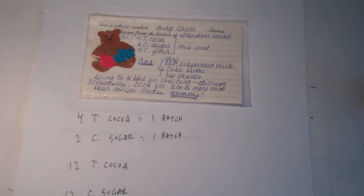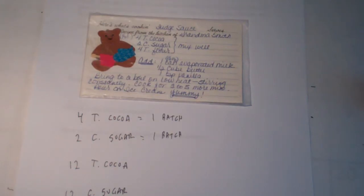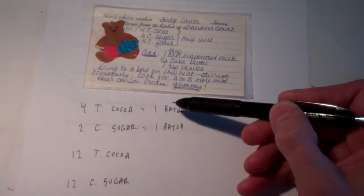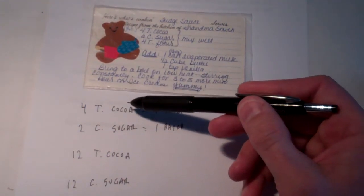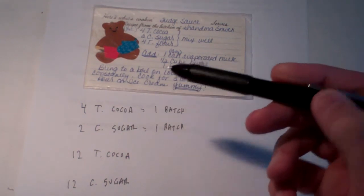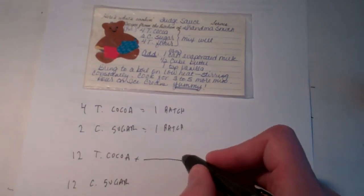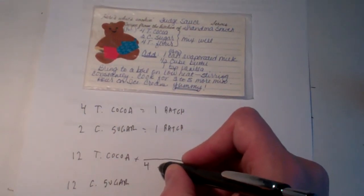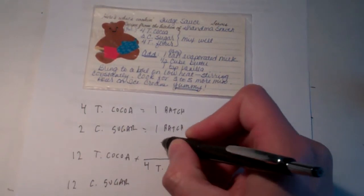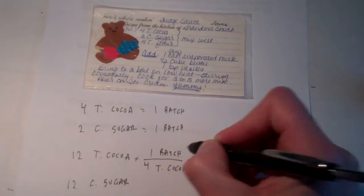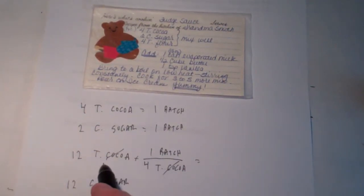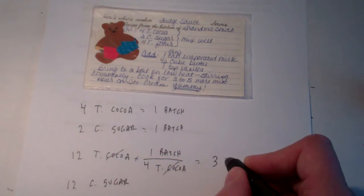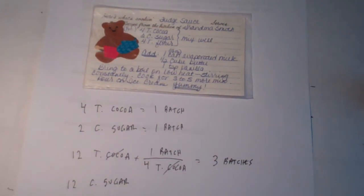So how many batches of homemade fudge sauce can I make with these ingredients, assuming I have plenty of the other ingredients on hand? Let's use the recipe quantities as conversion factors to make batches. If I have 12 tablespoons of cocoa, for every four tablespoons of cocoa I can make one batch of fudge sauce. So 12 tablespoons of cocoa would allow me to make 12 divided by four — three batches of homemade fudge sauce.